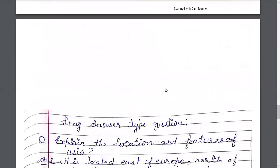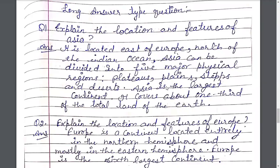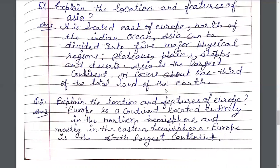Long Question Answer. Explain the location and features of Asia. Asia ki stititi tatha vishishtaon ki vyakhya kijiye. Asia is located north of the Indian Ocean and east of Europe. Asia can be divided into five major physical regions: plateaus, plains, steppes, and desert. Asia is the largest continent. It covers about one third of the total land area of the earth. Yeh prithvi ke kul dharatiya chetrafal ke ek-tihai bhaag mein phaila hua hai.